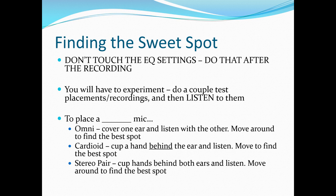For an omni mic, cover one ear completely with your hand and listen with the other. Move around to find where the instrument sounds the best in the room, and place the mic there. For a cardioid mic, cup a hand behind one ear and listen, then move around until you find the best spot. For a stereo pair, cup your hands behind both ears and listen, move around to find the best spot — this will determine where you put the stereo pair. Ideally, they'll be on one mic stand with a stereo bar.